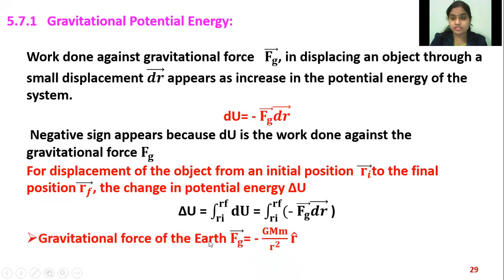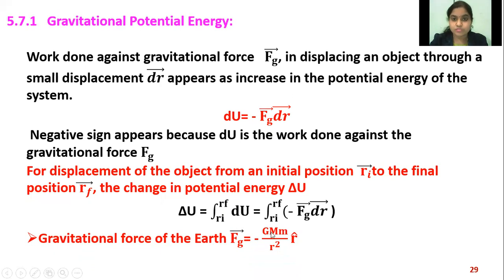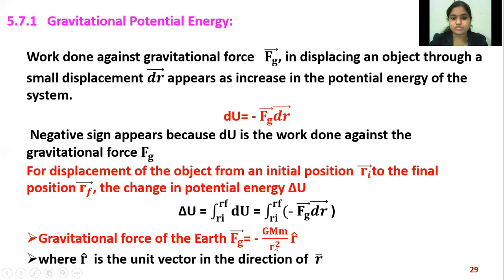The gravitational force on the object due to Earth is given by vector Fg equals minus GMm upon r squared times r-cap. Here G is the gravitational constant, capital M is the mass of the Earth, small m is the mass of the object, r squared is the square of the distance between the two objects, and r-cap is the unit vector in the direction of vector r.